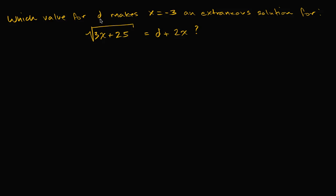We're asked which value for d — we see d in this equation here — makes x equals negative three an extraneous solution for this radical equation: the square root of three x plus 25 is equal to d plus two x. I encourage you to pause the video and try to think about it on your own before we work through it together.